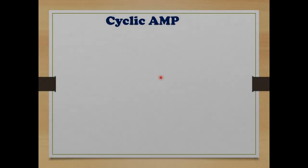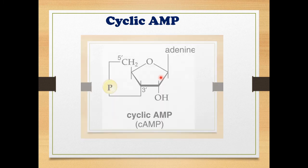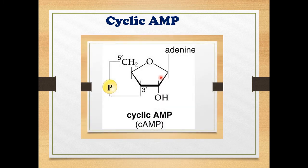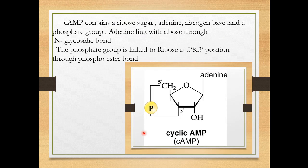Welcome to the second video of unit six. In this video we are going to deal with cyclic AMP. This is the structure of cyclic AMP. Let's discuss how it is formed and what are its important biological functions. Its components include a ribose sugar, a nitrogen base, and a phosphate group.